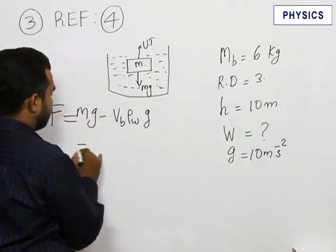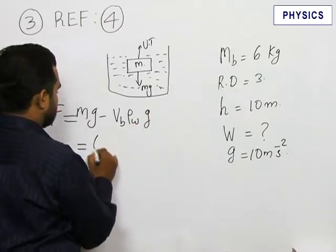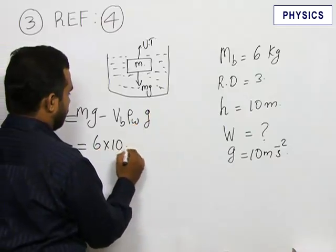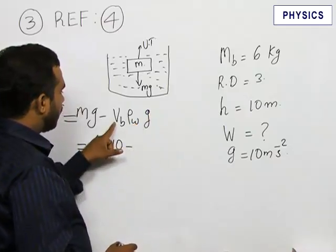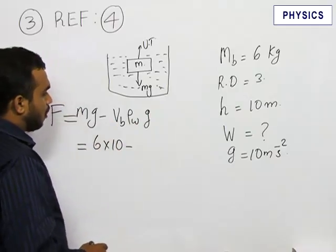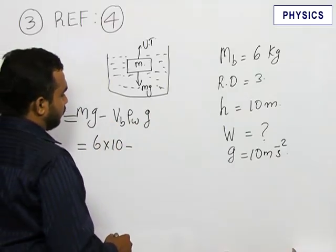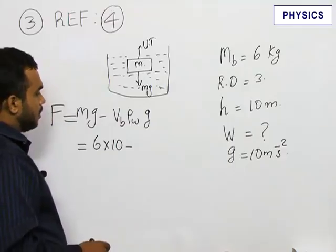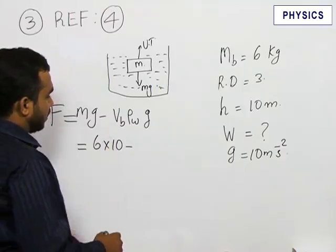We can write mass of the brick is given as 6, 6 into 10 minus, we have to find the volume of the brick. Volume of the brick can be found from relative density, which is mass of the brick by density.